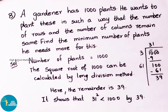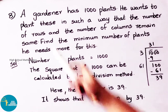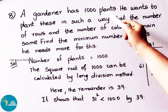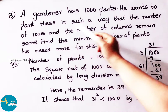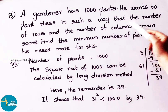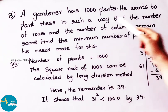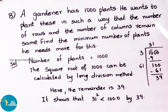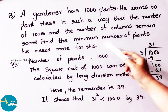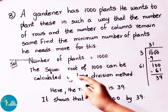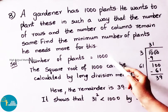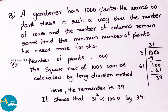See now question number 8. A gardener has 1000 plants. He wants to plant these in such a way that the number of rows and the number of columns remain the same. Find the minimum number of plants he needs more for this. Now let us see the solution. The number of plants given is 1000.